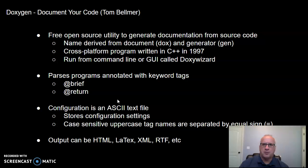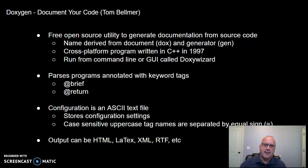Some of the keywords used as examples are @brief, where you would supply a brief description of what your program does. @return is another example — what is returned from the process of the program you're talking about. There are probably 50 or so of these. The configuration file is called DoxyFile by default, and it contains uppercase tag names separated by an equal sign, forming name-value pairs.